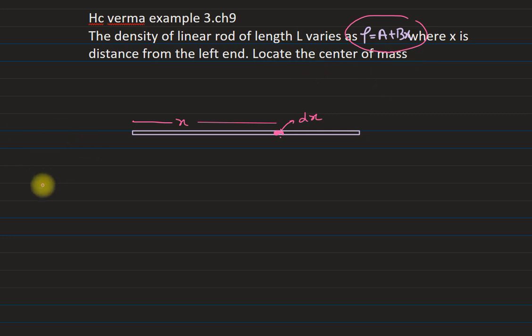So for these type of systems, continuous mass distribution, we have to use this relation to calculate the x-coordinate of center of mass. It is ∫x dm divided by total mass. But here the total mass is not given. So we have to take the small mass, mass of a small element and integrate it within proper limits.